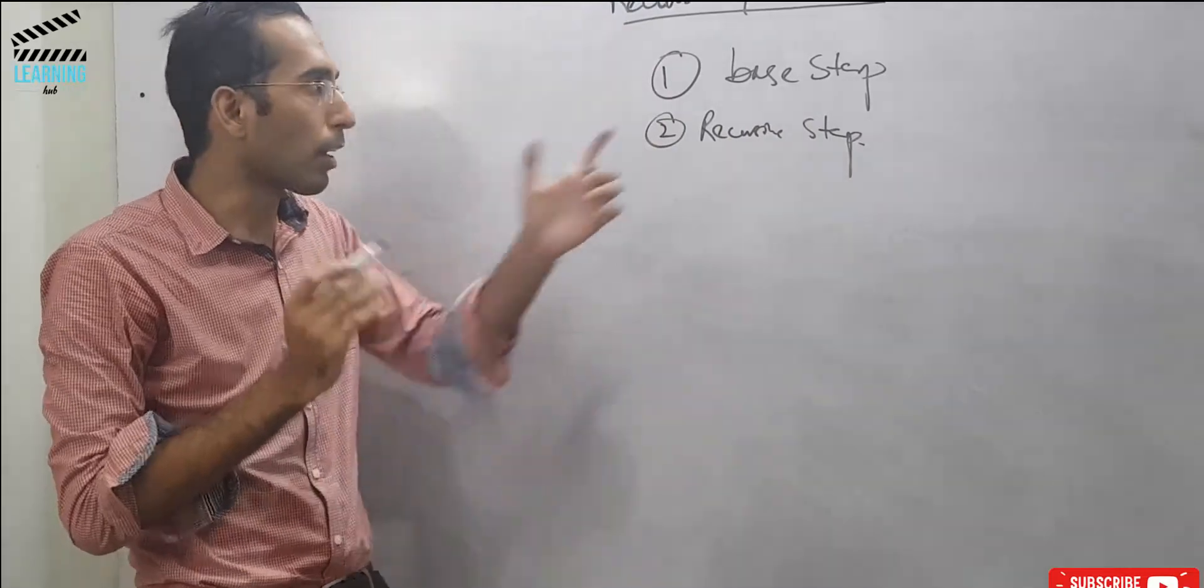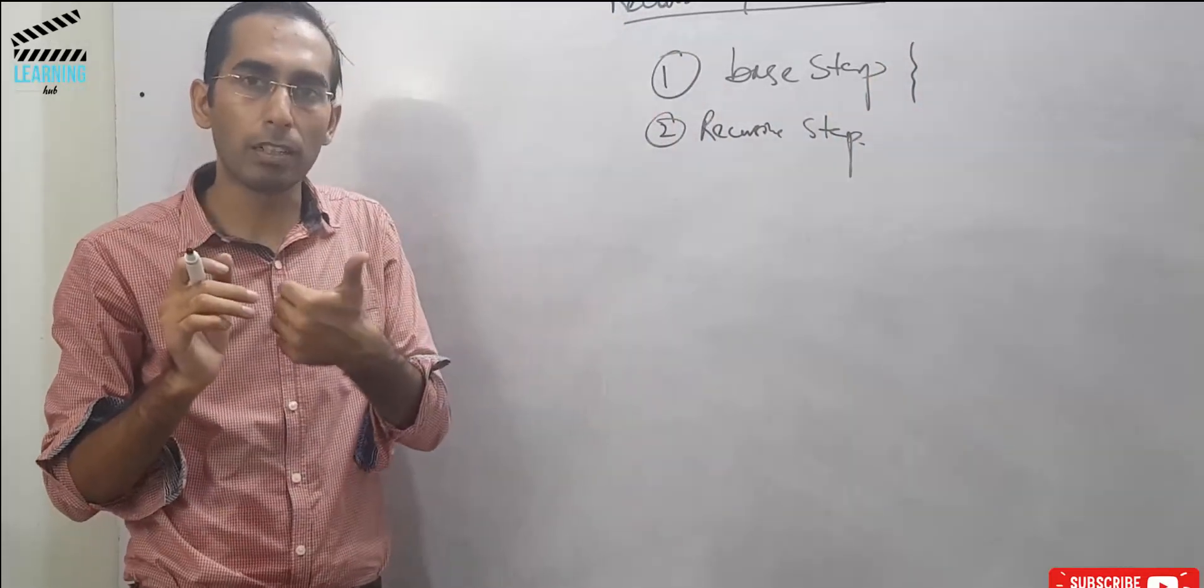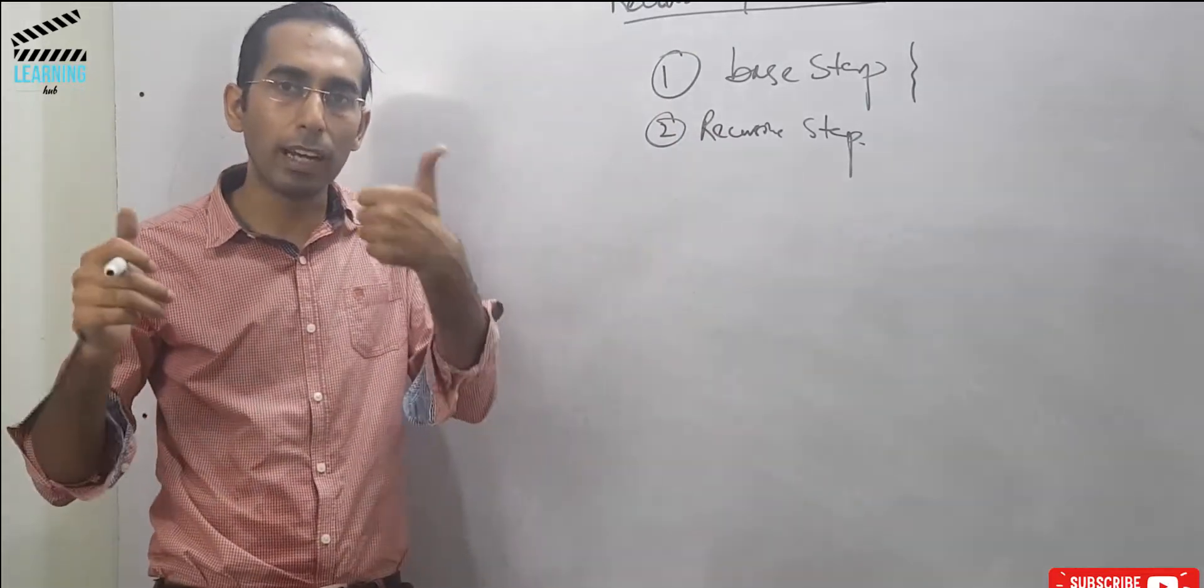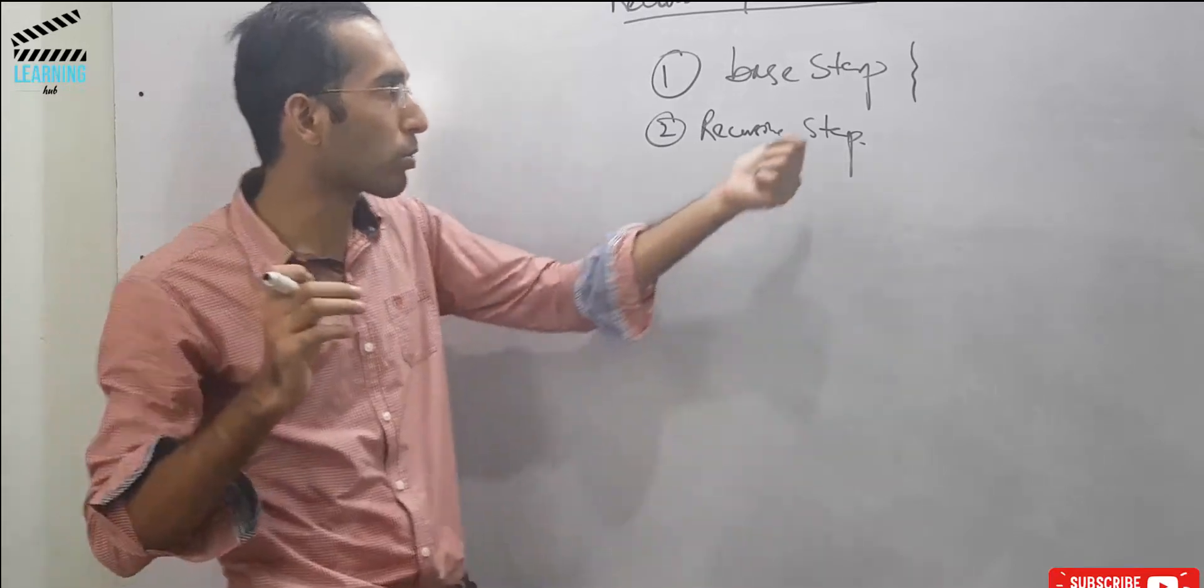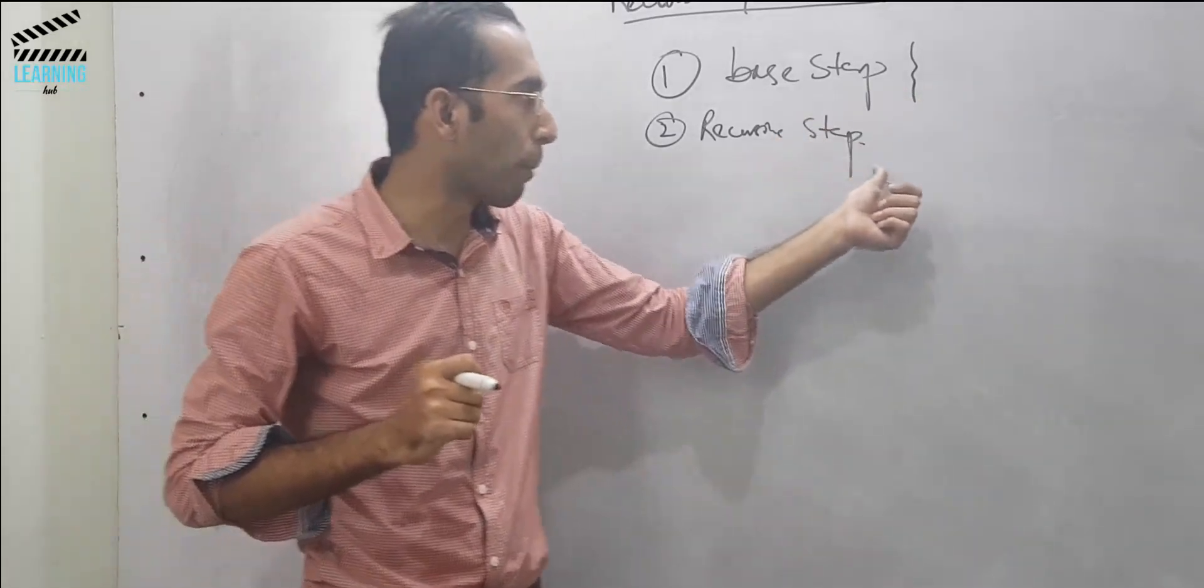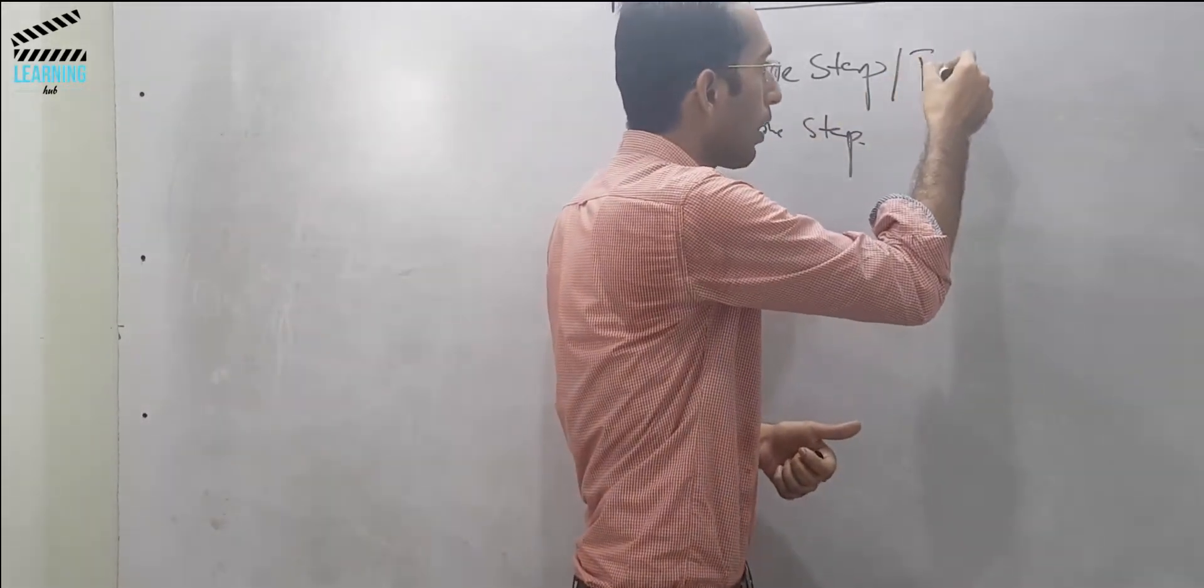In the base step, we will find terminating conditions that the minimum input will give us a result. For example, if we have 10 elements given to us, if we perform a single element operation, then the result will give us a result. That is the base step. And the recursive step means that we will call the same function again. This is also called terminating condition.